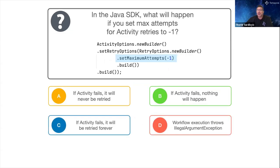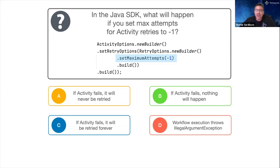Here's a hard question about the Java SDK: what happens when you set the max attempts for activity retries to negative one? The default for activity retries is unlimited. If you define your activity options and retry options and set maximum attempts to minus one - options: A, activity fails and is never retried; B, nothing happens; C, activity is retried forever; or D, workflow execution throws an IllegalArgumentException.